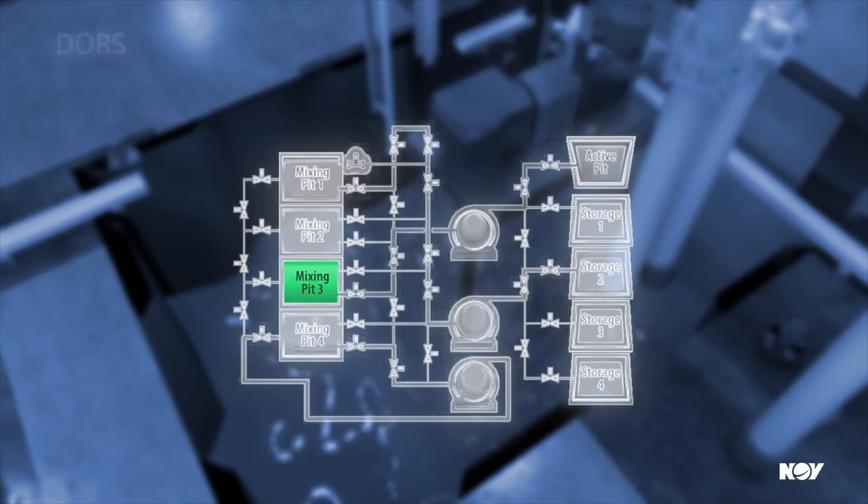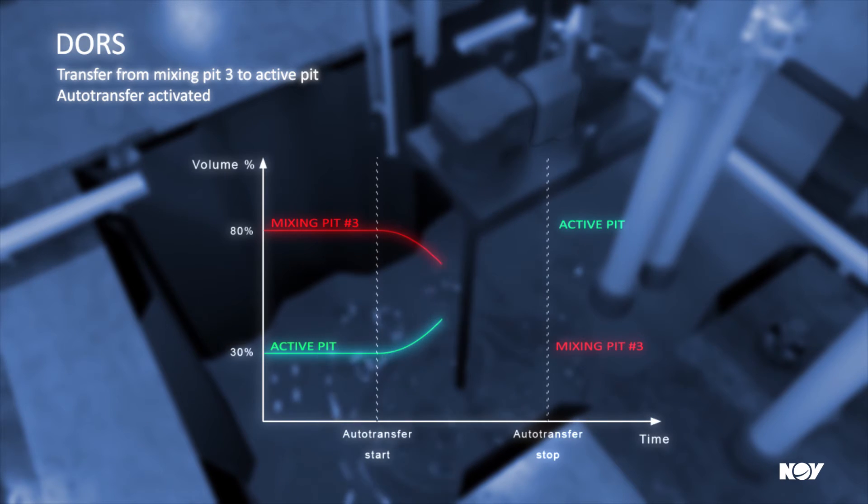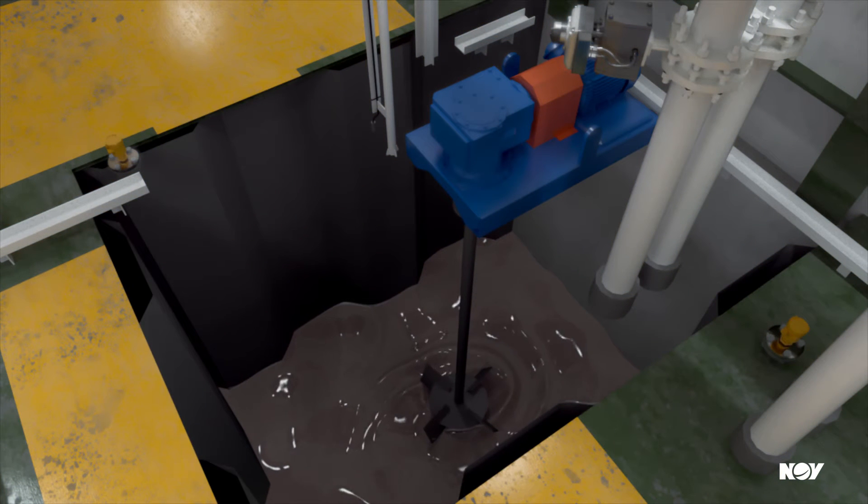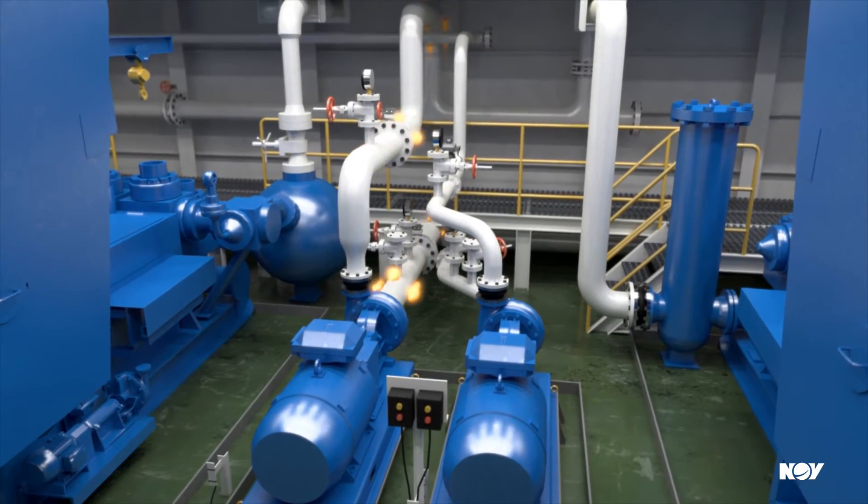DOORS is a fully automated system for routing of fluid which includes lineups, pumps and valves. The operator chooses to transfer fluid from mixing pit 3 to the active pit and the system will find the optimal route. The pump starts and valves open automatically.